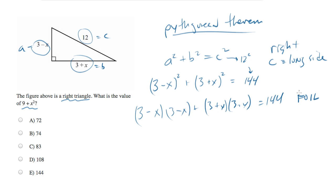FOIL is an acronym which stands for first, outside, inside, last. And it's the order we multiply when we're multiplying two binomials by each other.